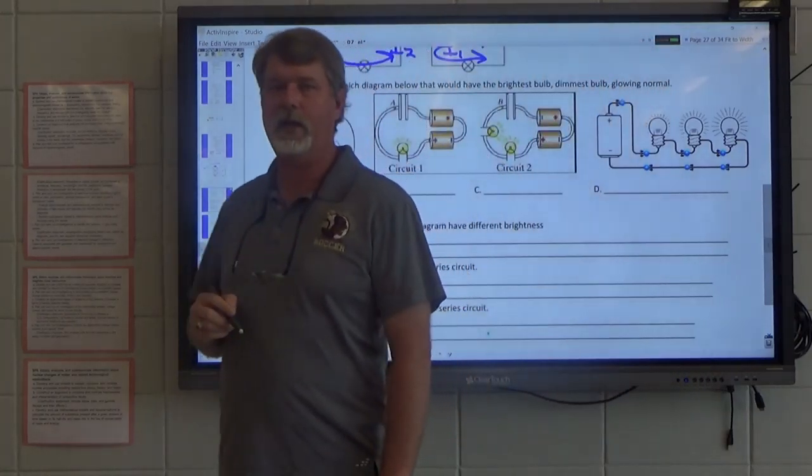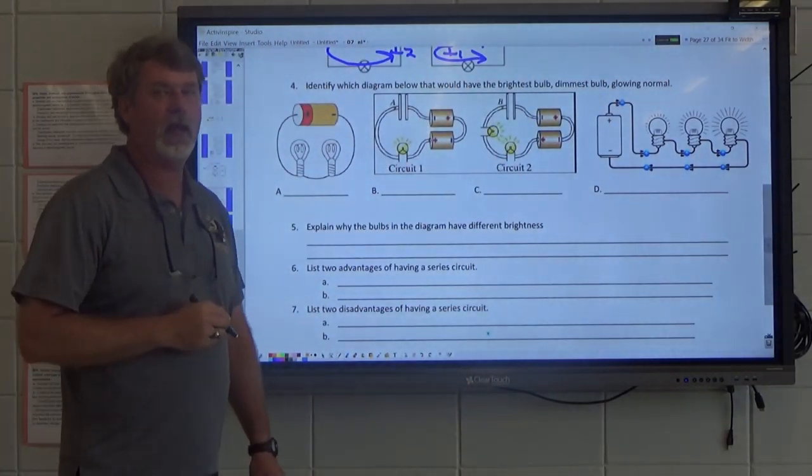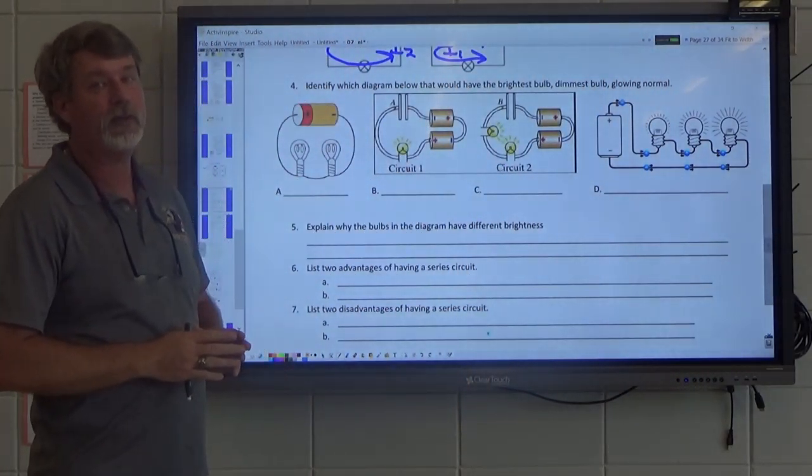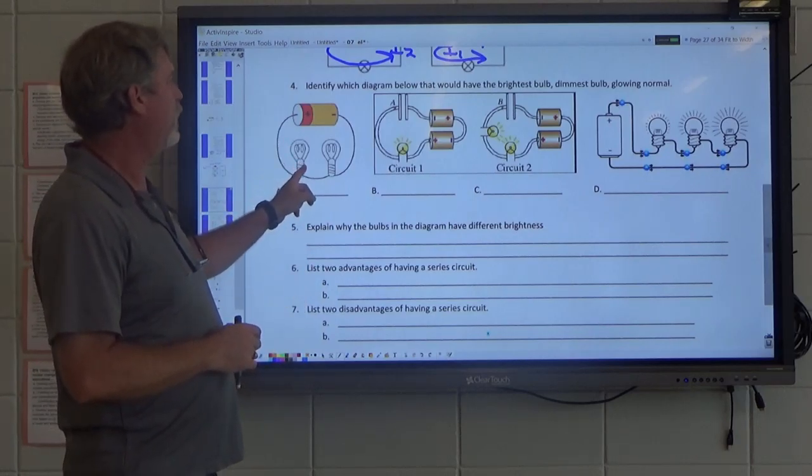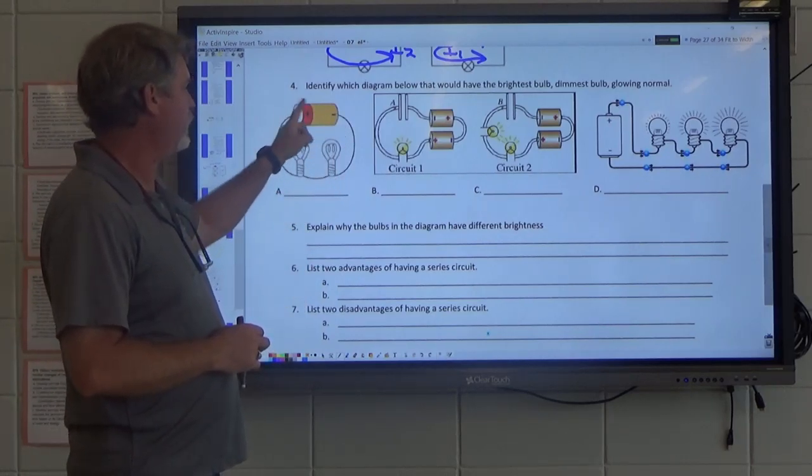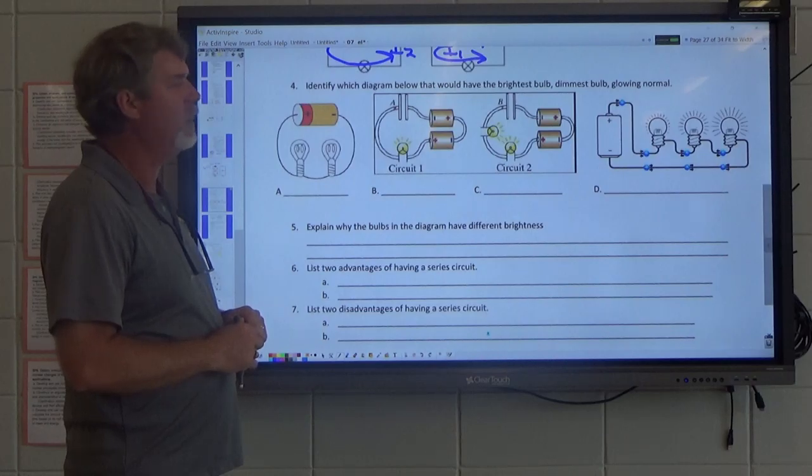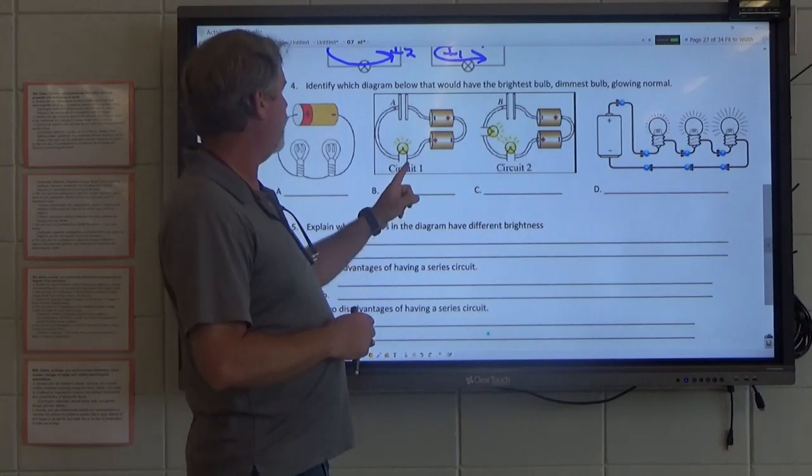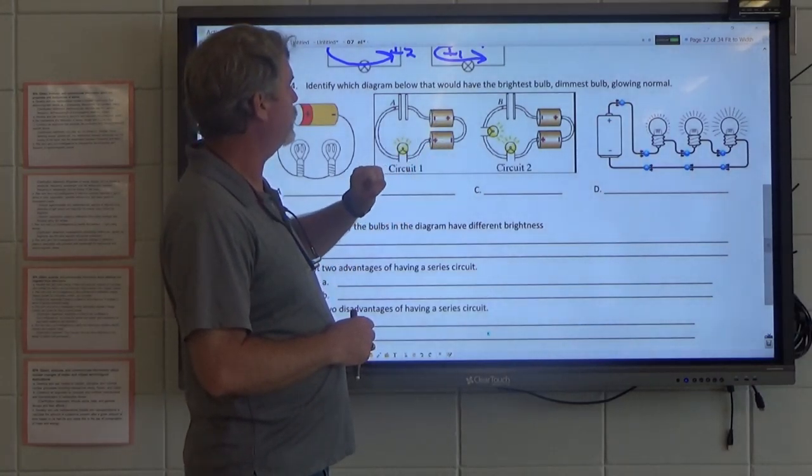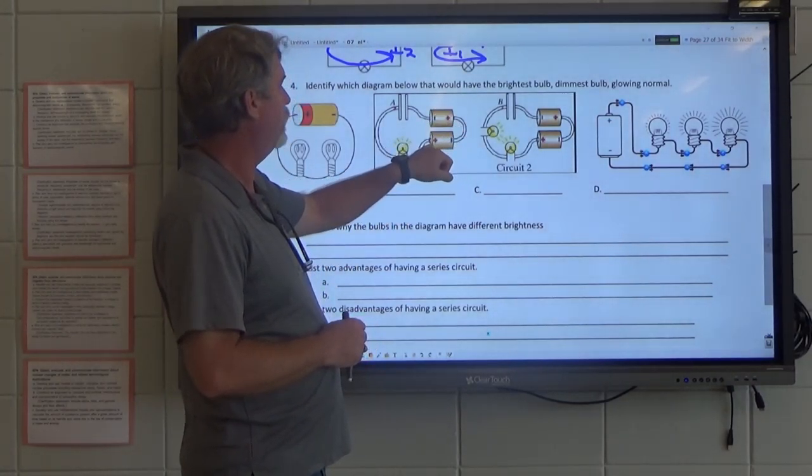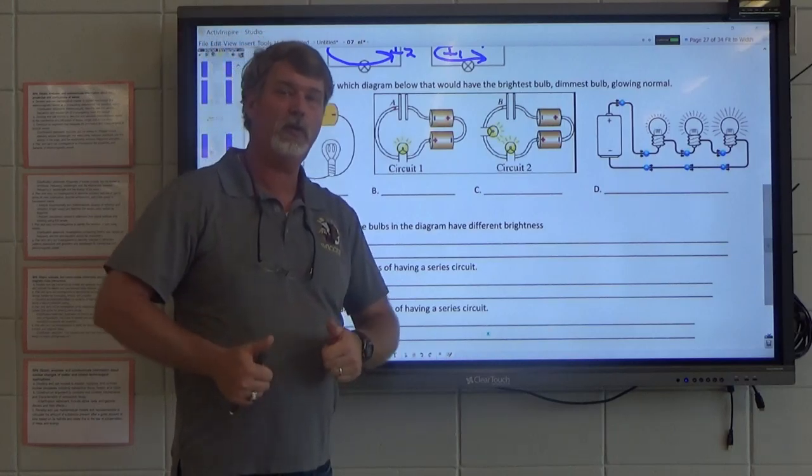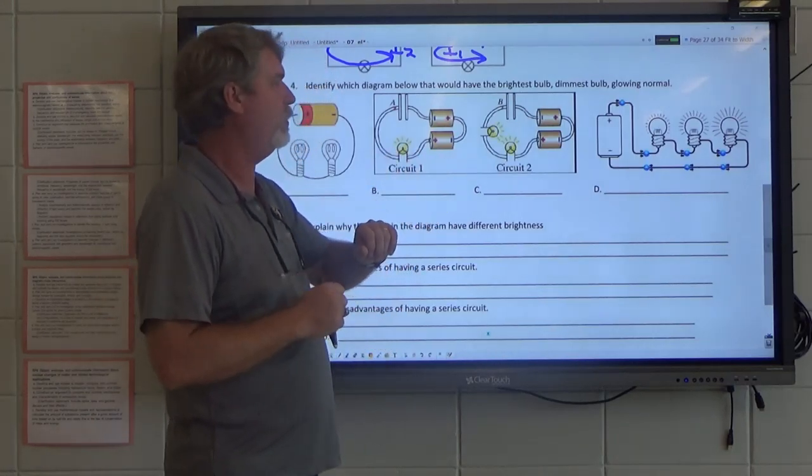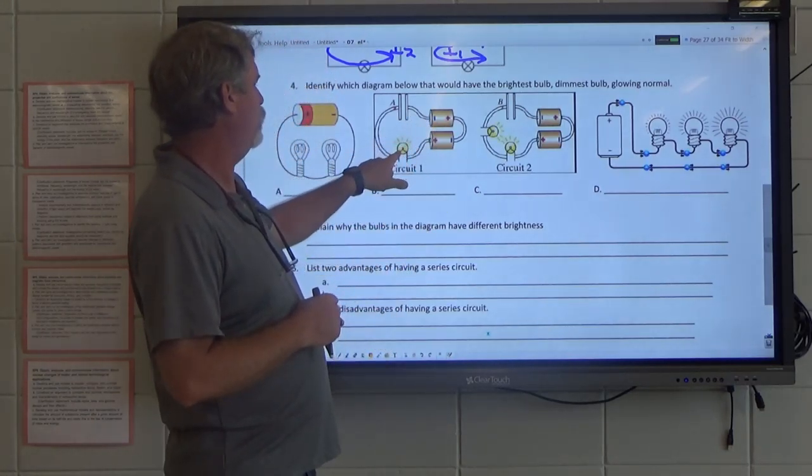Let's talk about which one would have the brightest bulb right here. It's an important advantage and disadvantage of both types of circuits. So we start off with a series circuit with two bulbs. We're going to assume that each of these batteries is the same voltage. So here we have a circuit, two batteries, wired in series. That means the voltage is going to go up. Two batteries, more voltage. Two batteries, one light bulb. Two batteries, two light bulbs.